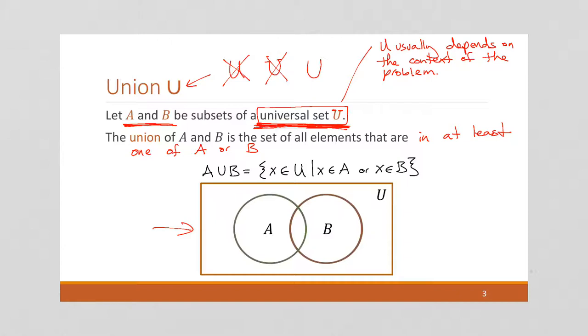And we can shade this as covering everything in A or in B. Right? So this is A union B.